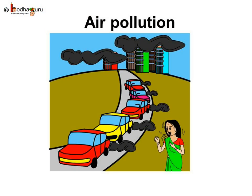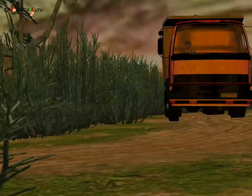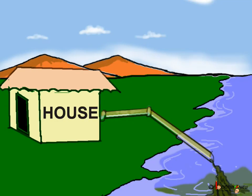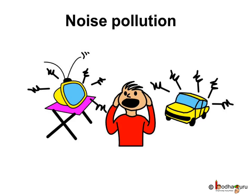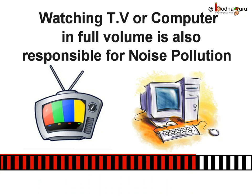Let us see air pollution first. What makes the air dirty or polluted? Air pollution comes from power stations, chimneys or factories and burning of fuels in vehicles as they release smoke and gases. The wastes from factories and farms, and at times even sewage from homes, hotels and hospitals, are the main sources of water pollution. The noise from factories, vehicles and loudspeakers create noise pollution. If you are watching TV or playing computer games at full volume, you are also responsible for creating noise pollution.